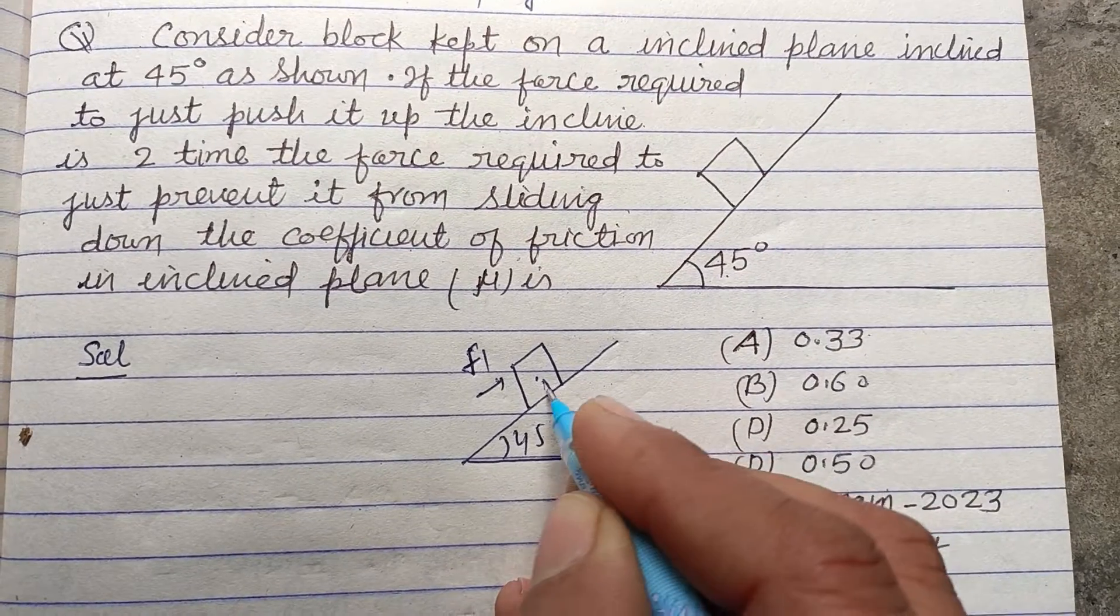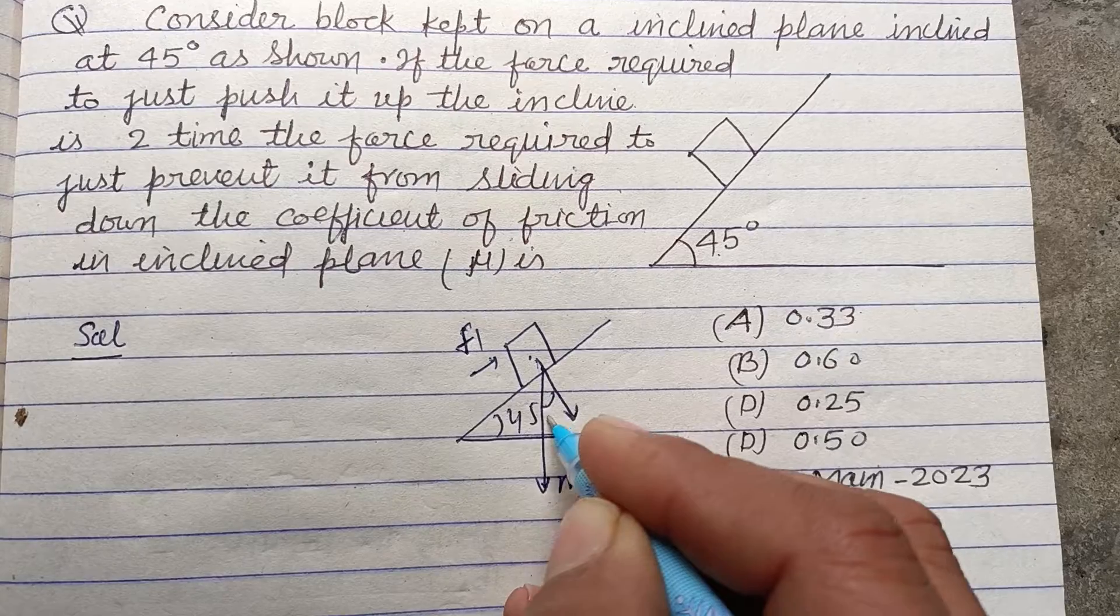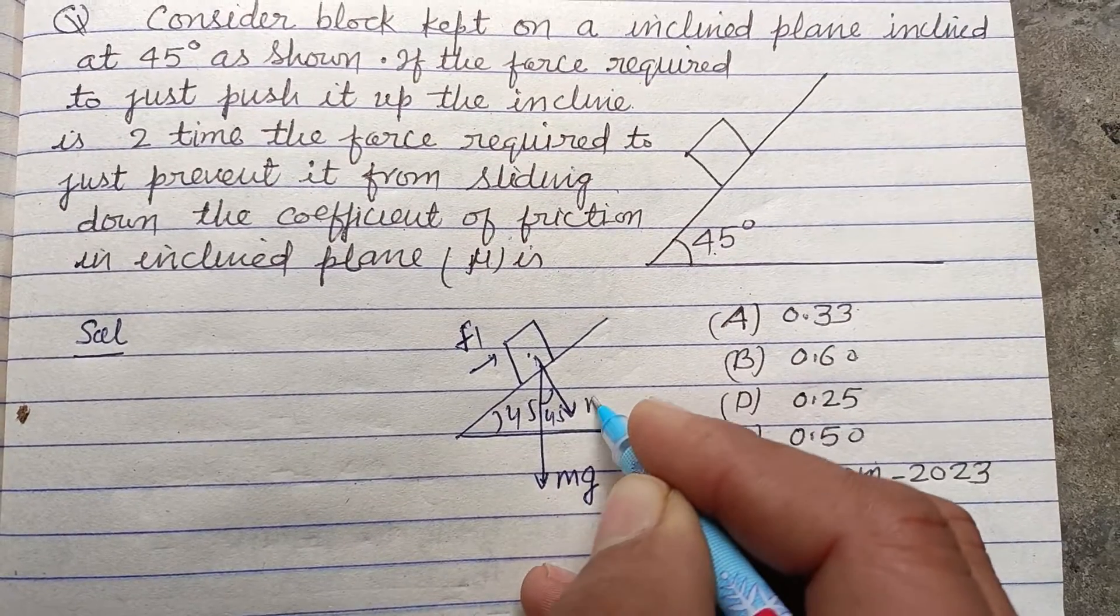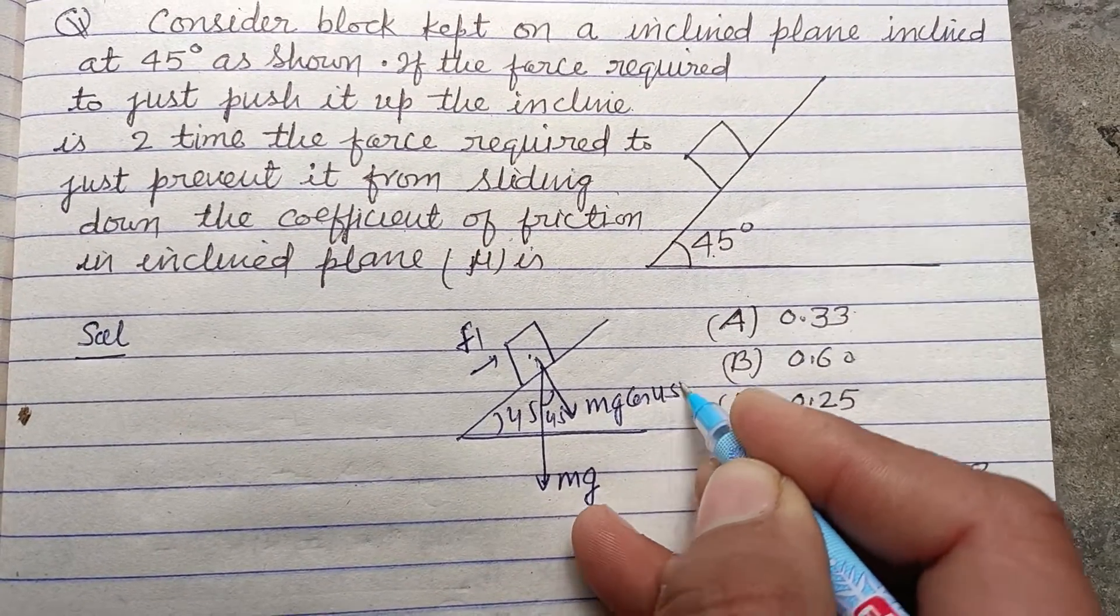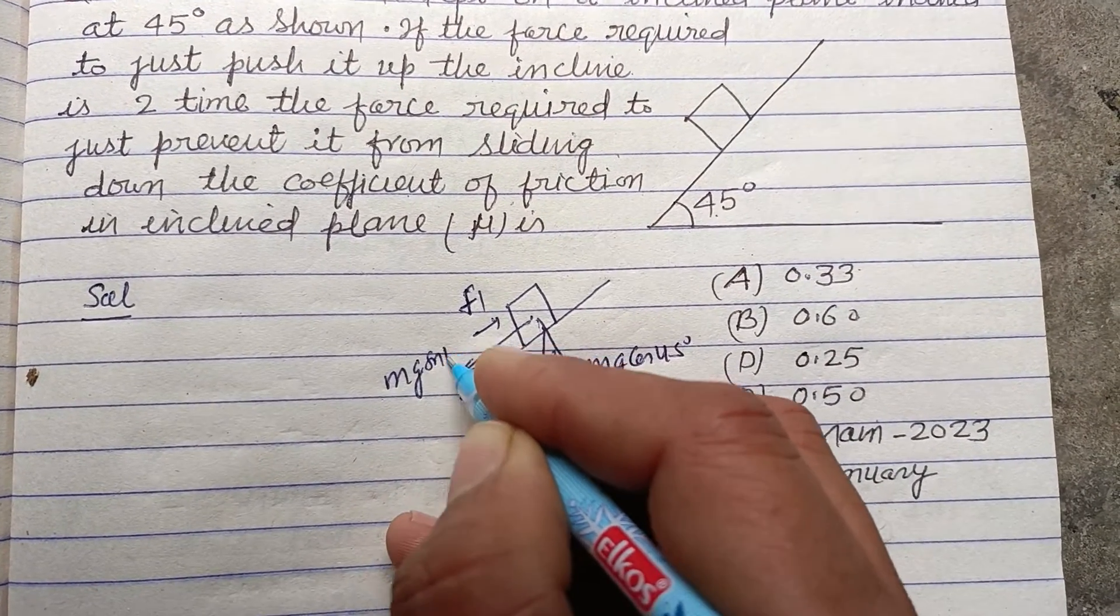So its weight works in downward direction. Here it is also 45. So Mg cos 45 and Mg sin 45.